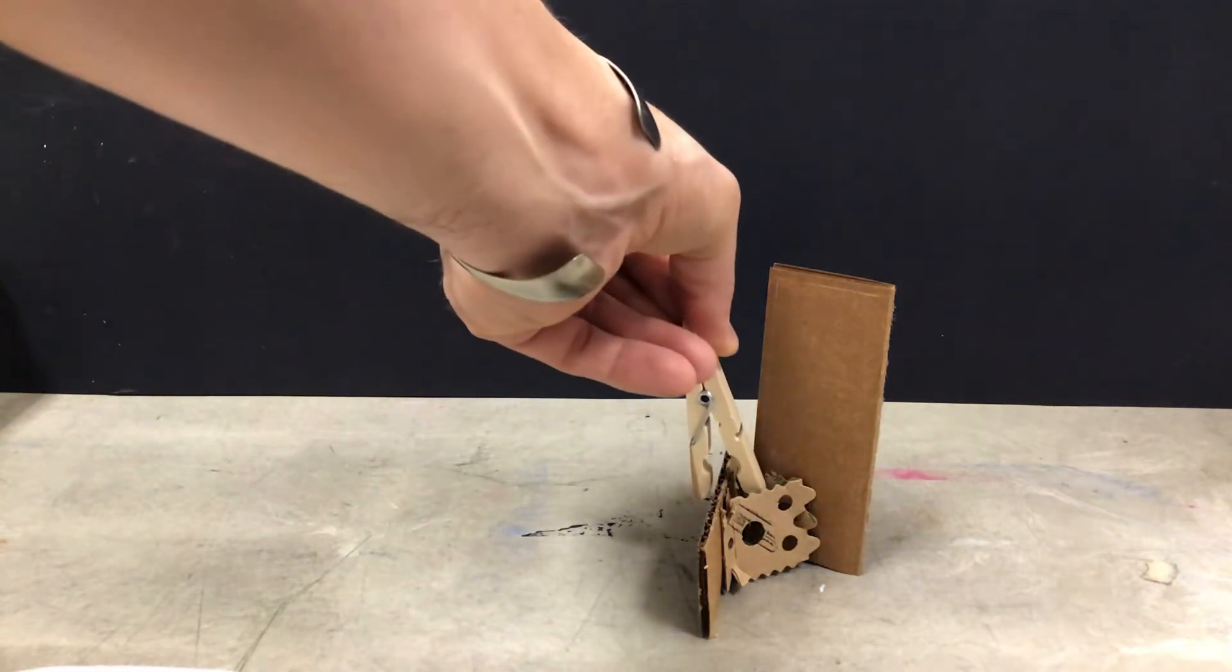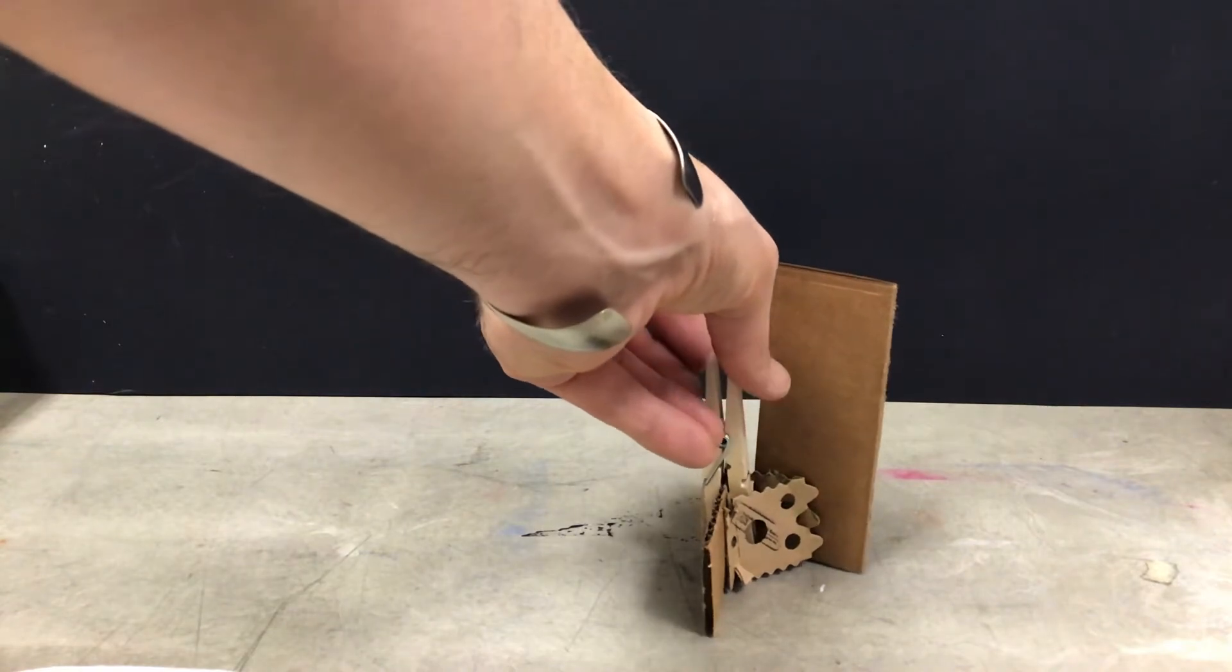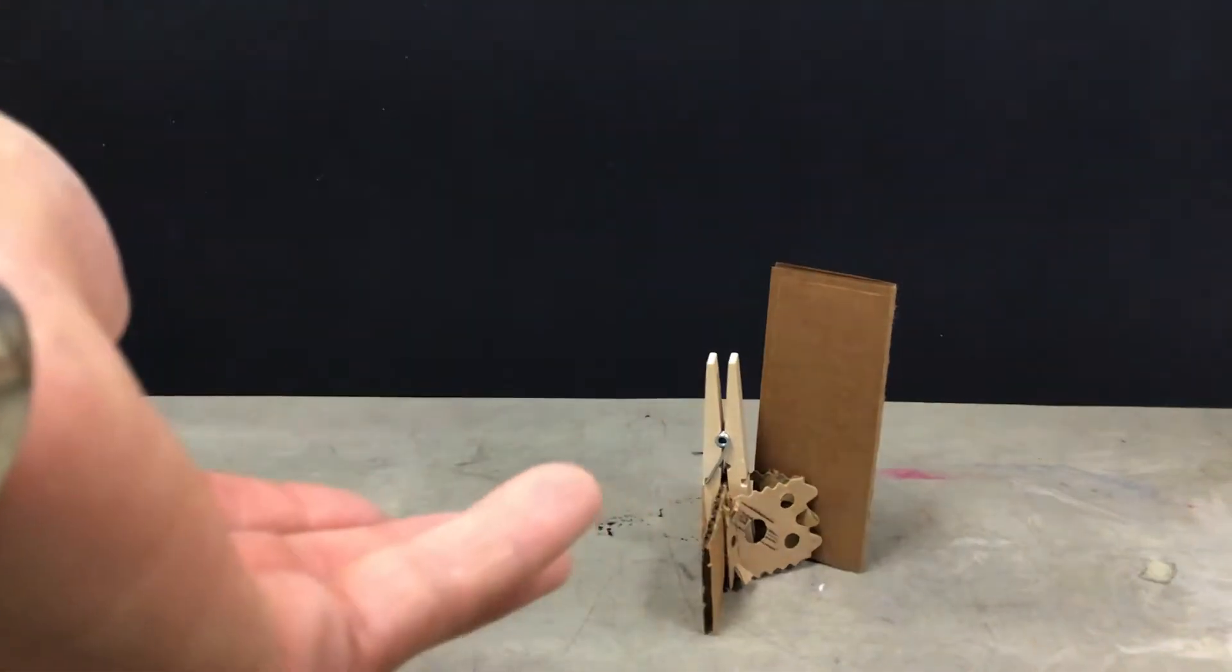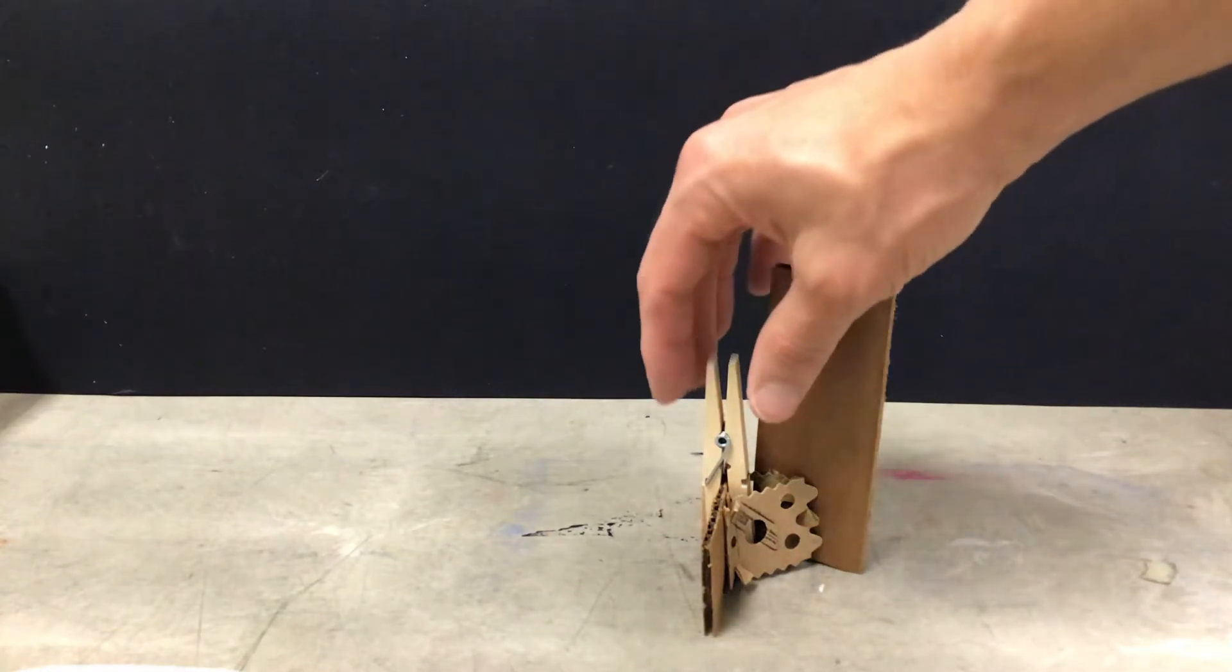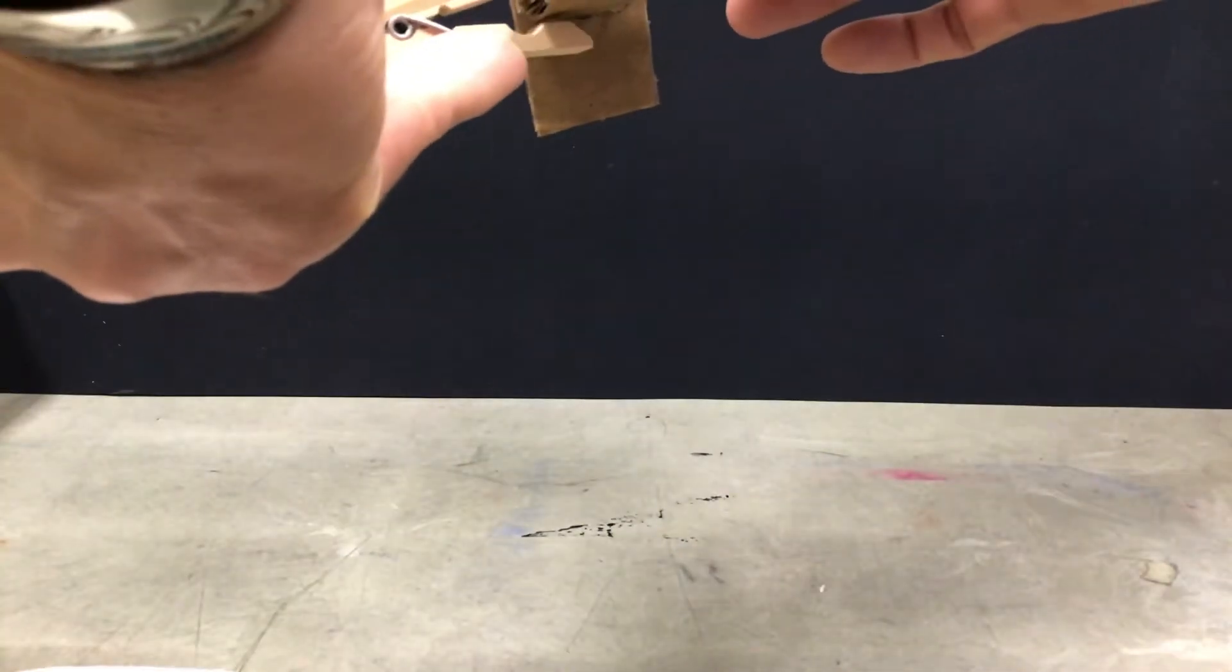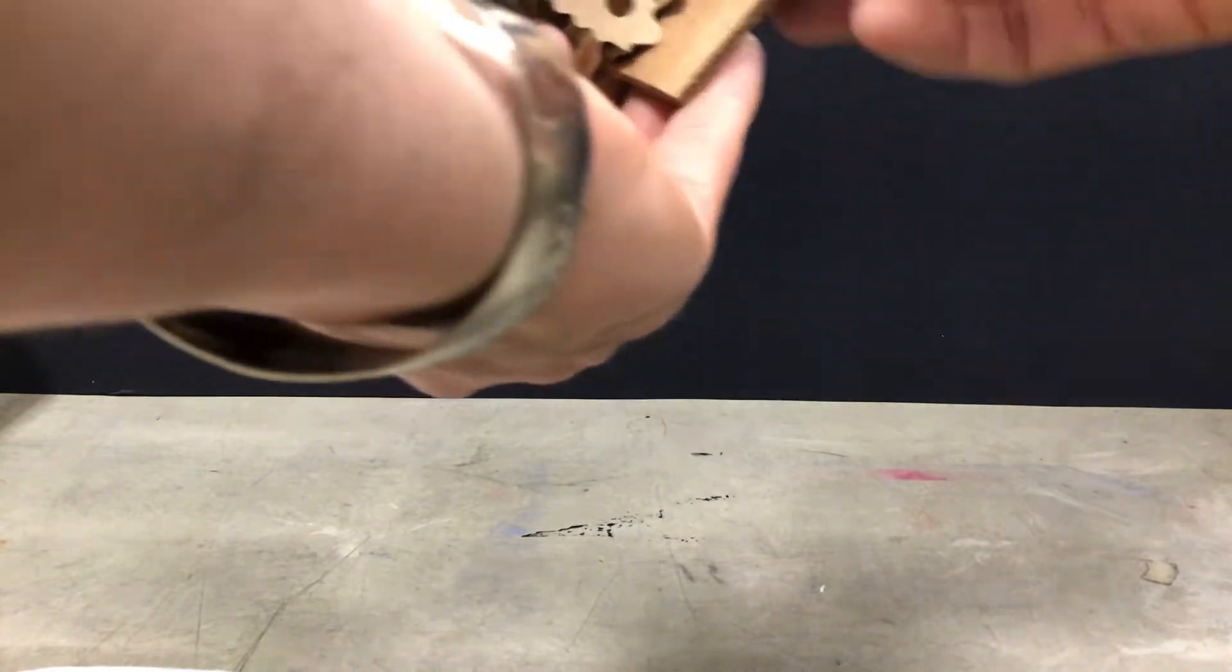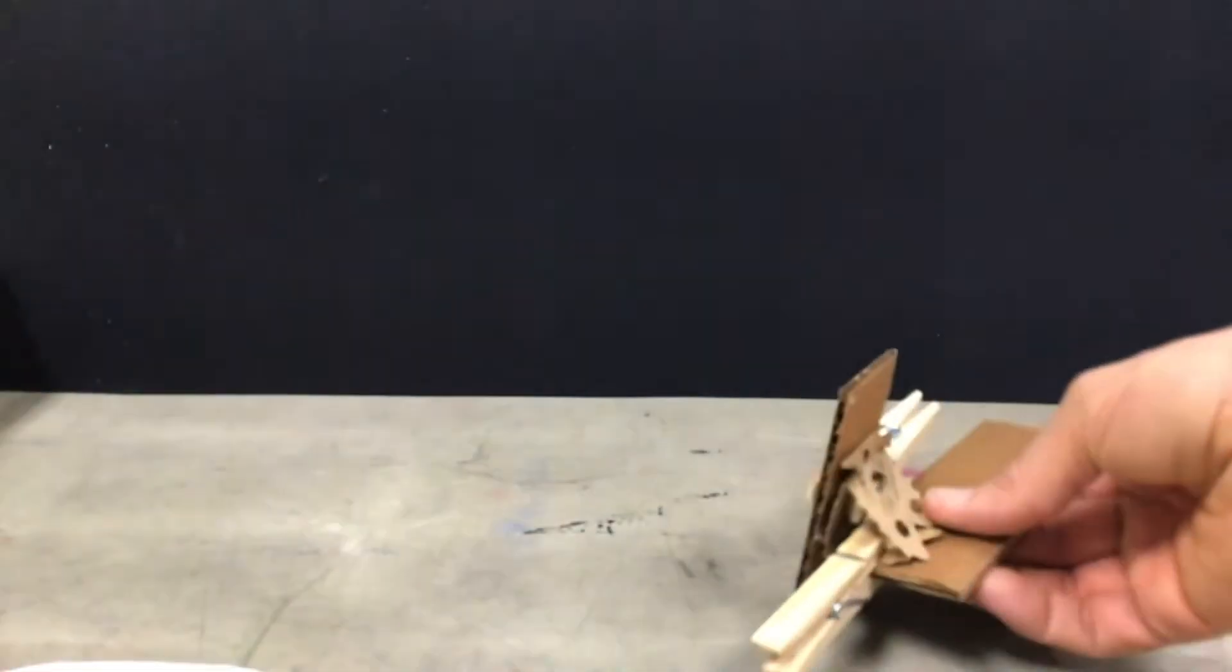Something else you can use is like if I take this clothespin and I clip this on there, that's going to help hold that in place while I'm adding other parts to it. So I could even like this one that I added glue to earlier, maybe slide that on there, clip that against that so that's helping hold it while I'm getting my next piece ready.